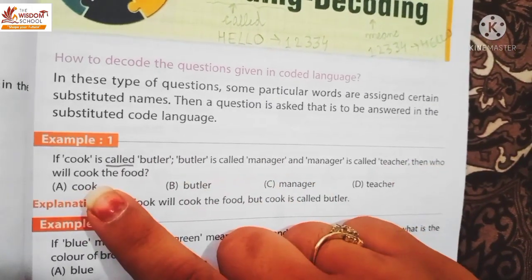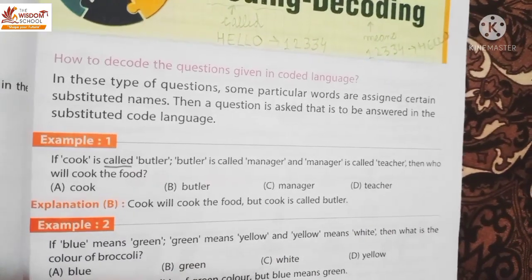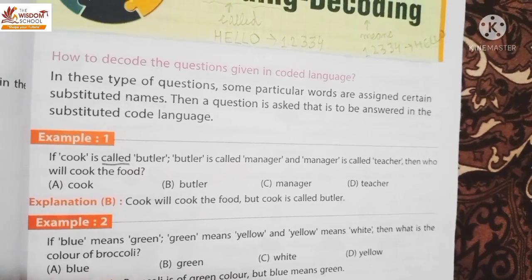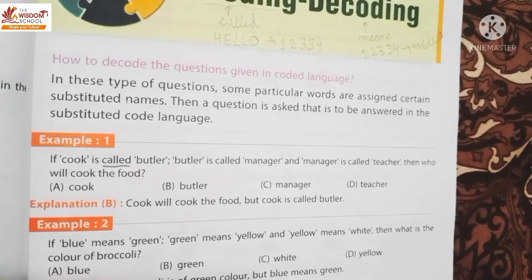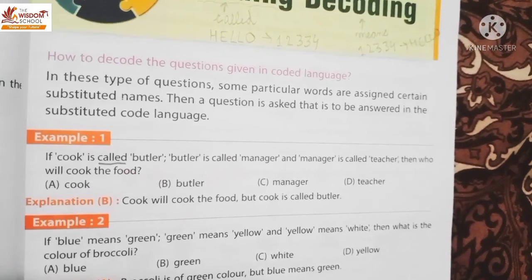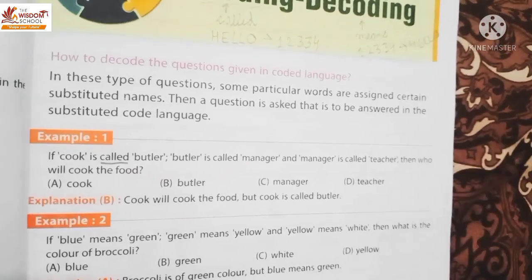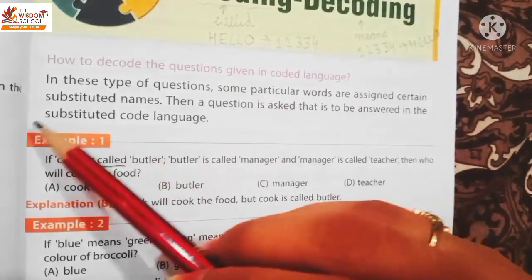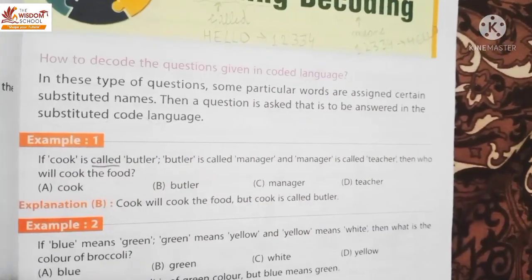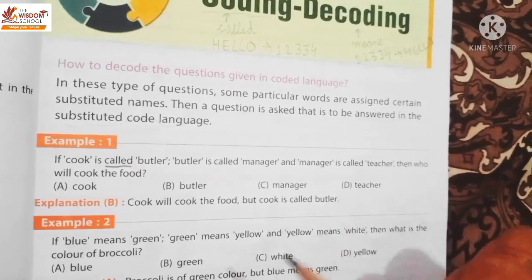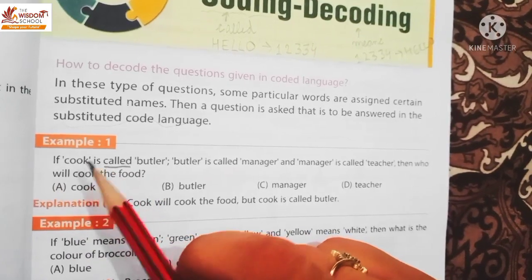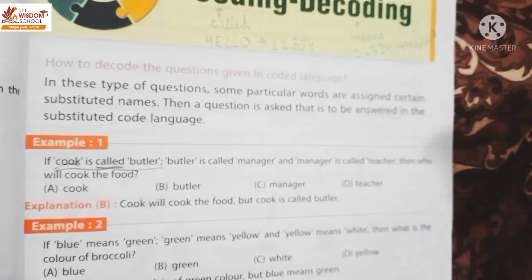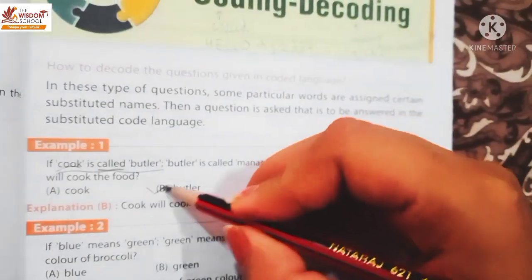Then who will cook the food? Food ko koon cook karega students? Joh cook hota hai, woh food ko cook karta hai. But hum ne answer coded language mein dena hai. Yaha pe hum cook ko kya bol rahe hain? Cook is called butler. So humara answer kya hai ga bachay? Butler. So answer hoga option B.